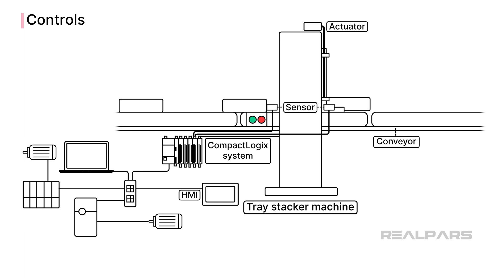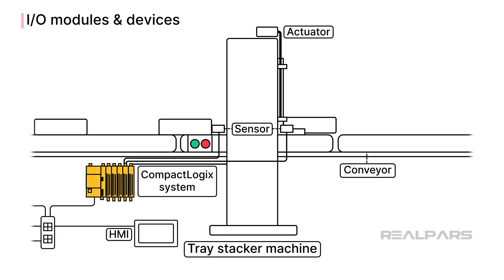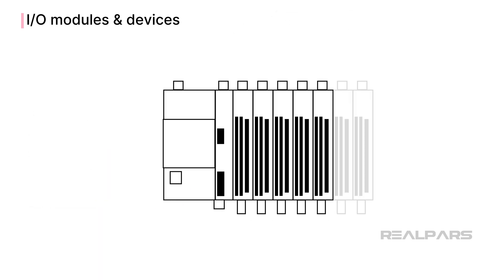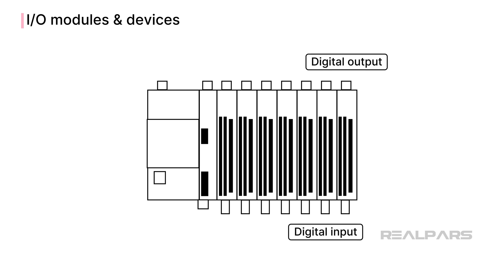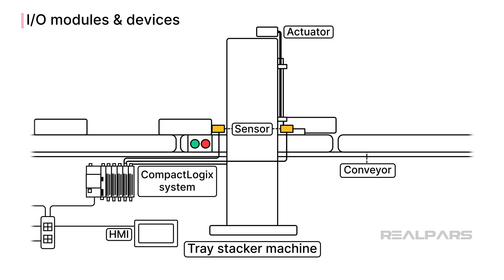The PLC understands the state of the process by monitoring inputs from sensors and controls the process by controlling actuators. A CompactLogix controller can be extended with I/O modules to interface with these devices. The most common types of I/O modules are digital input and digital output modules. The sensors in the application are wired to input modules and tell the PLC important information about the process, like if a button is pressed or if a tray is in position on the conveyor.